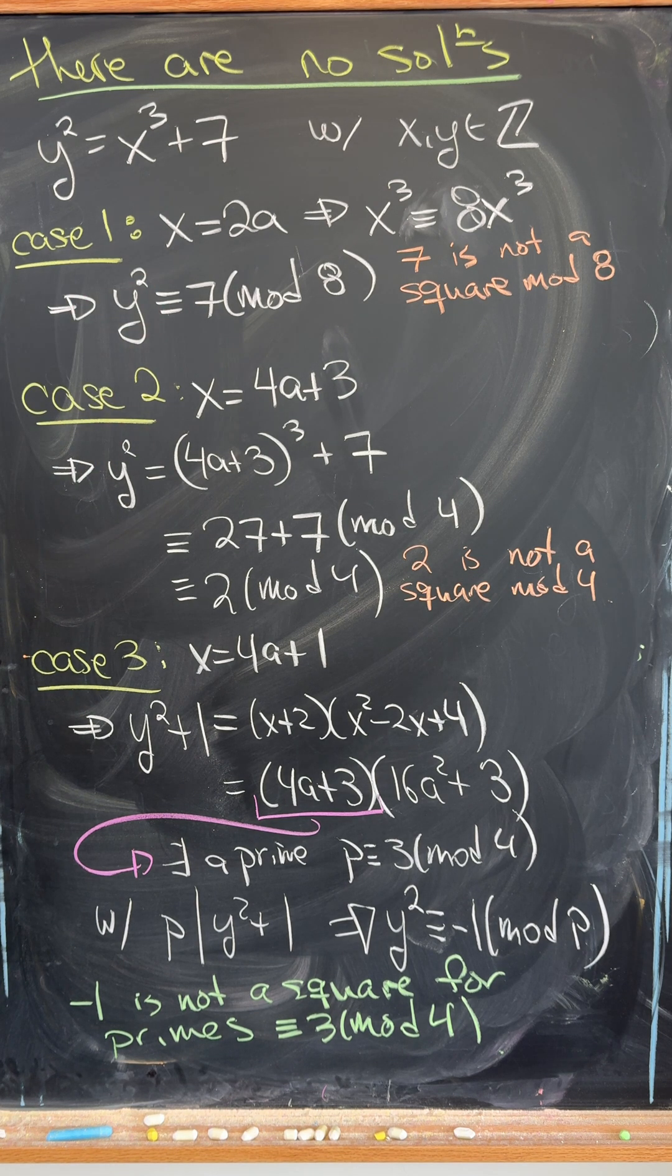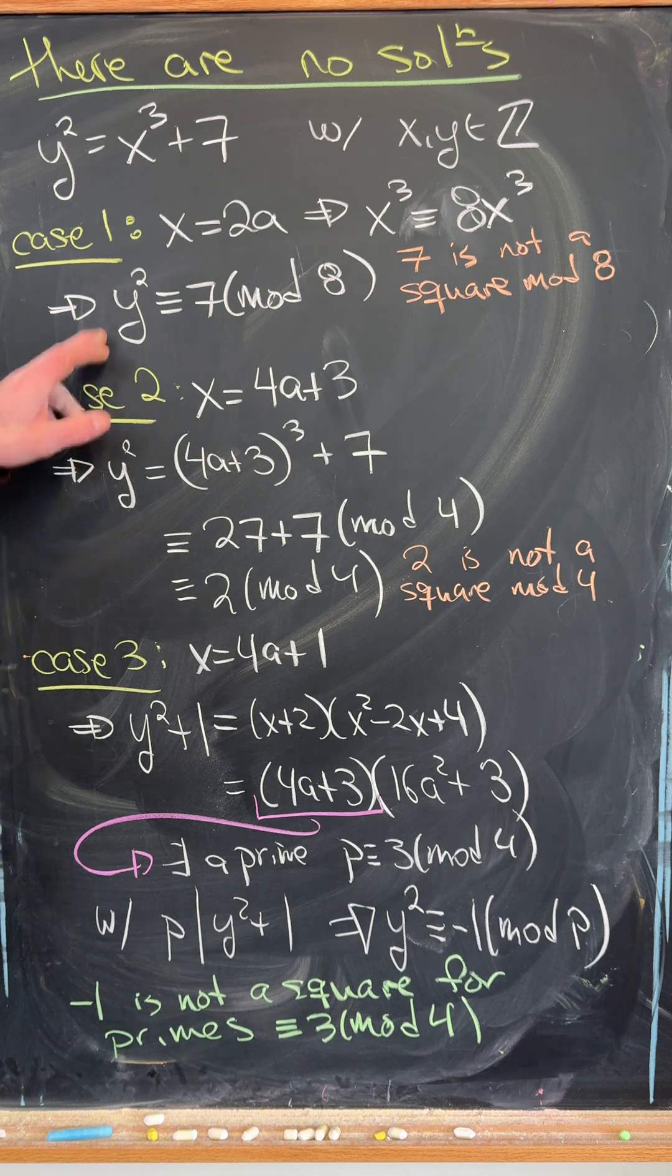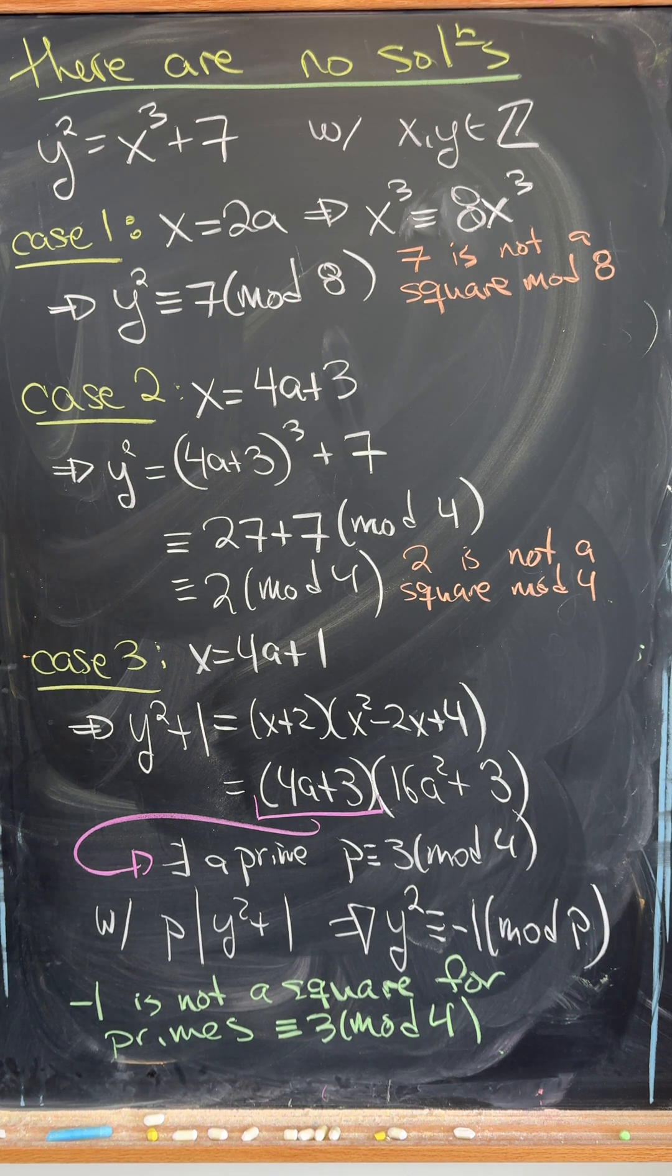Now in the case when x is even, this reduces pretty quickly to y squared is congruent to 7 mod 8. But it's pretty easy to check that 7 is not a perfect square mod 8, so that means this does not have a solution.